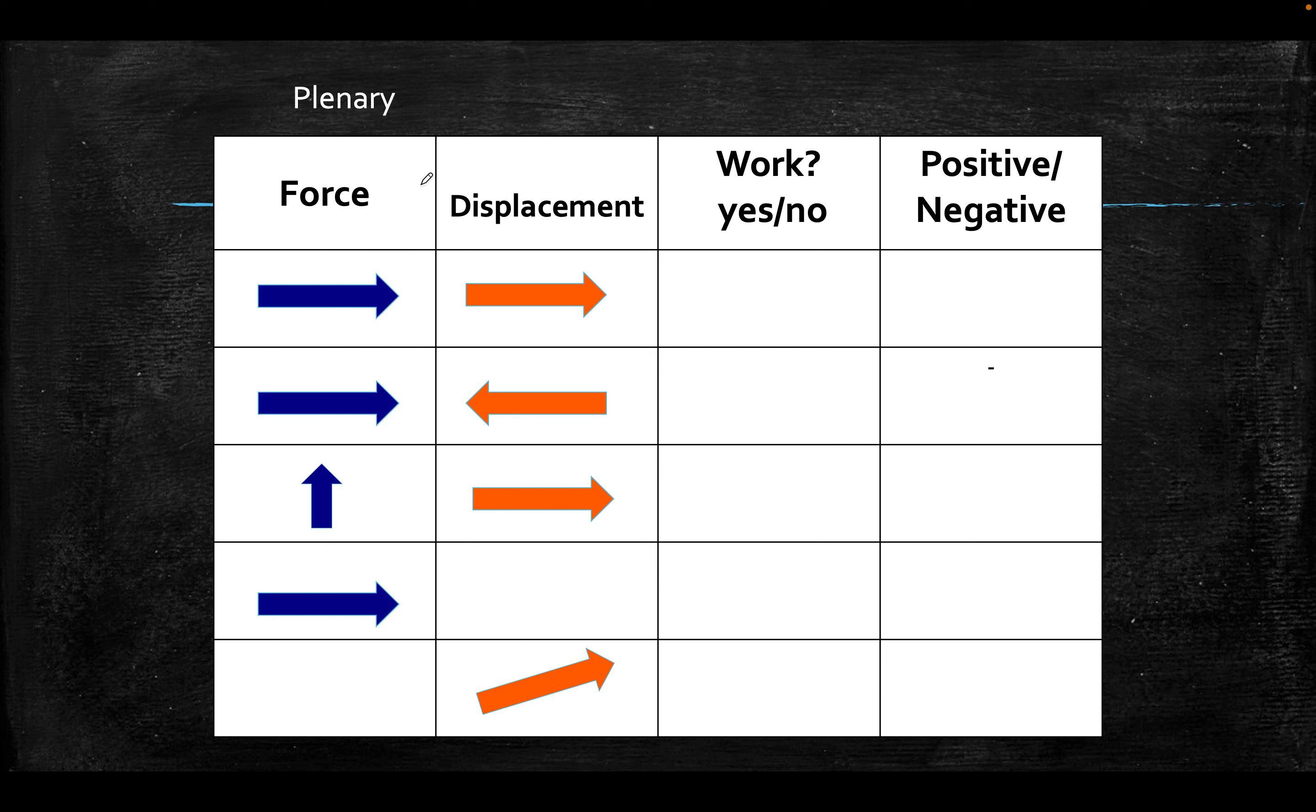So quick plenary. Force displacement. Work done, yes or no? Yes, it is. And it will be positive. So it is work done and it will be positive. Opposite directions. Yes, it will be done, but it will be negative. This is perpendicular. No work will be done. There is no force, or in this case, actually, there is no displacement. No work, no force, no work. Even if it was an angle, but it had to be a force for there to be something. But no. That's the end of that. Nice and easy. Thank you.